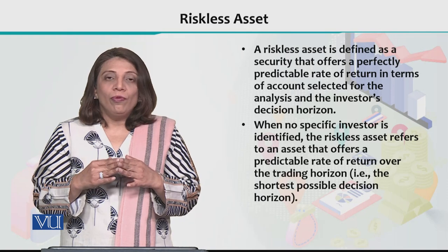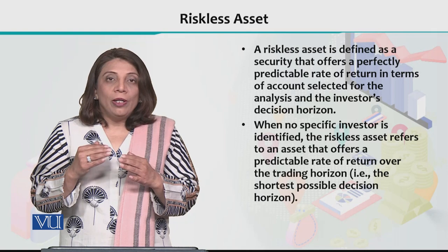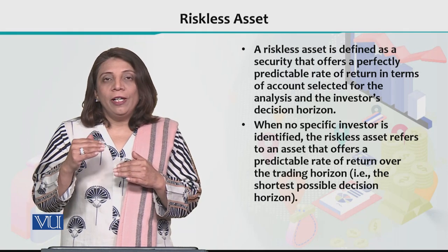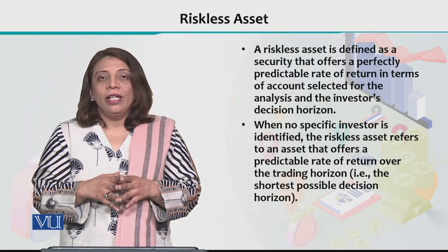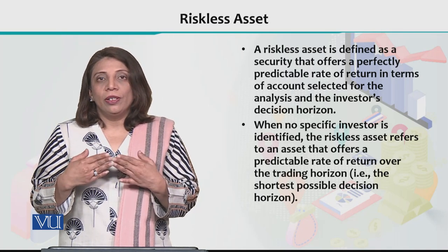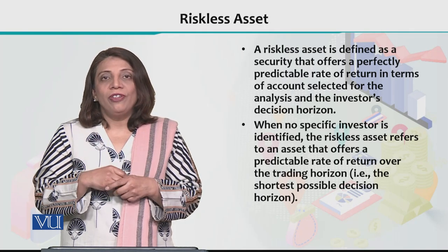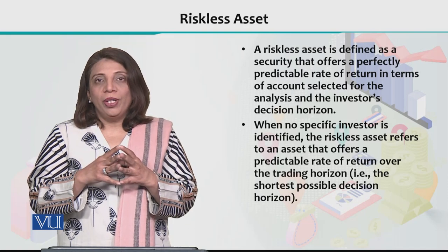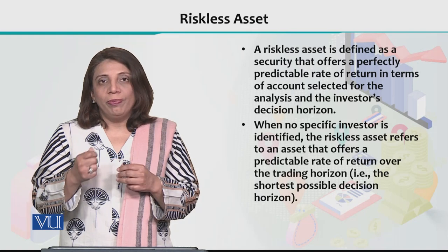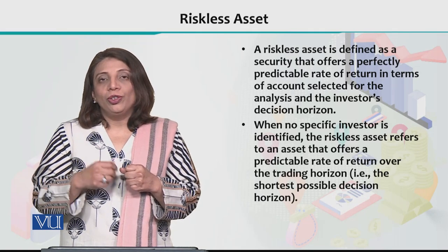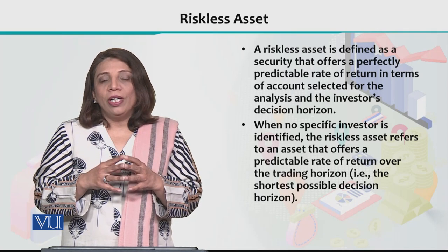A riskless asset is a security in which you know the rate of return with certainty in every situation. An example is a Treasury bill — issued by a state bank — where there is a perfect prediction of return. For instance, if you invest for three months, the rate of interest is 6%, which you know with certainty.